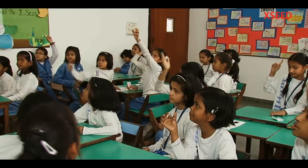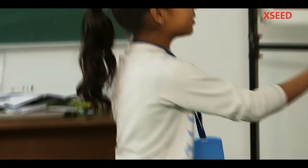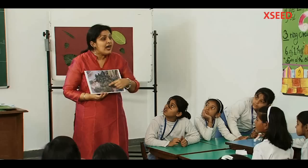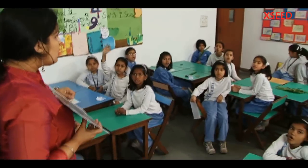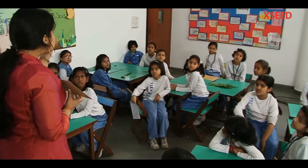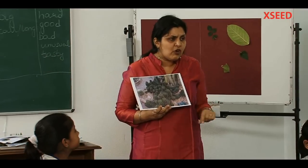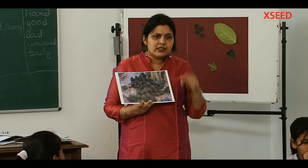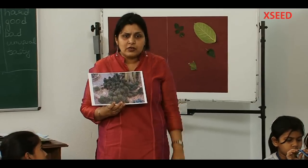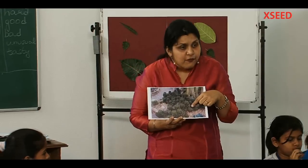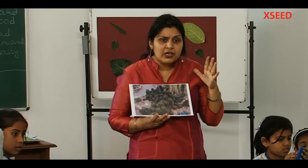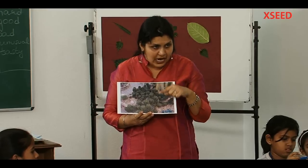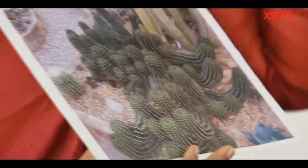Have you all seen a cactus plant? Yes. So here is a cactus plant. Do you think that the cactus plant has leaves? This white thing — these are the leaves of a cactus plant. So what kind of leaves are they? Small leaves. Why do you think the leaves are small? Have you seen a tap in the washroom? How much water comes from a tap? Lots of water. Have you seen a shower? How much water comes from each hole? Less. So if water has to come out from these leaves, how much water will come out? Little. This quality of the leaf helps the plant to live in a desert.